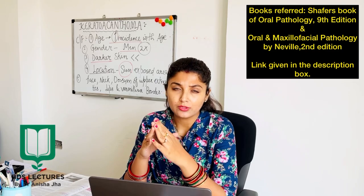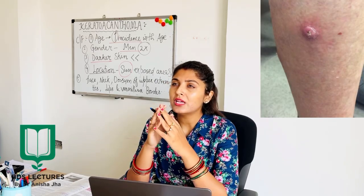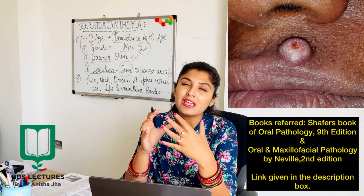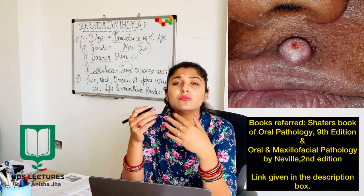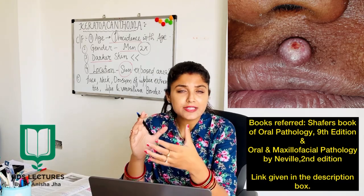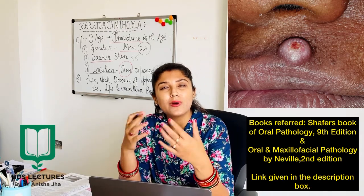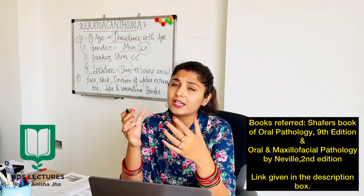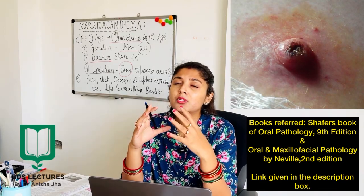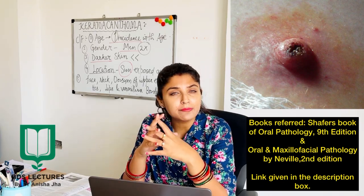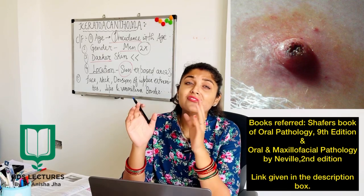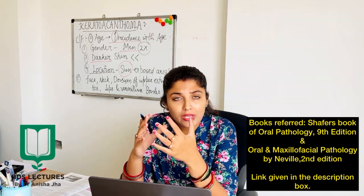Moving on to the clinical features: the age of occurrence is younger age, and incidence increases with advancing age. Regarding gender predilection, males are two times more affected than females. As for skin type, people with darker skin and higher melanin pigmentation are less commonly affected by keratoacanthoma compared to those with lighter skin tone.